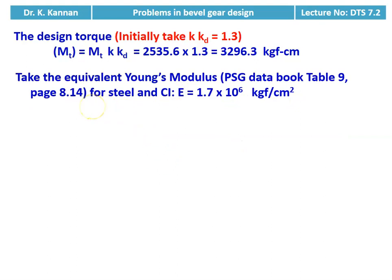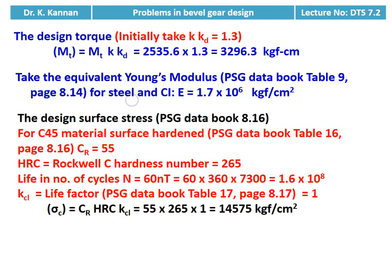We take the equivalent Young's modulus. We have two materials: pinion steel and wheel cast iron. For the steel and cast iron combination, the equivalent Young's modulus is 1.7 × 10⁶ kgf/cm² from table number 9, page 8.14. For design surface stress, for C45 material, coefficient Cr = 55 and HRC = 265. Life in cycles = 60 × 360 × 7300 = 1.6 × 10⁸ cycles. Since life exceeds 10⁷ cycles, life factor = 1. So σC = 55 × 265 × 1 = 14,575 kgf/cm².